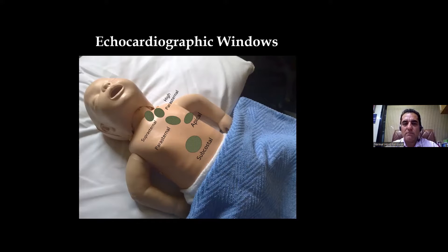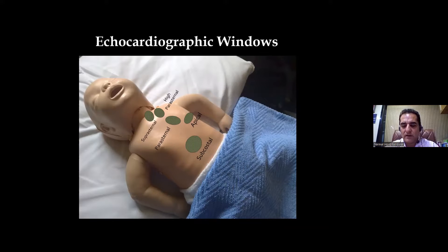So when we complete all these views in these particular windows, it completes everything. Basically, the four main windows are: apical view, low parasternal views, high parasternal views, and subcostal views — these are the four main windows from where we look for most of the views of the heart.